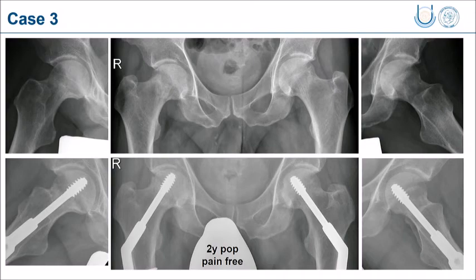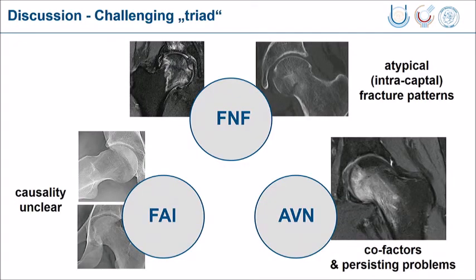This is a little irritating for me. When we think over this challenging triad, we have atypical fracture patterns in our patients - they are not clearly at the femoral neck but are more intracervical. We have cofactors for the necrosis in our patients; it is not pure necrosis. There is a little smoking and other factors, and of course we cannot say whether the impingement plays any causal role here.